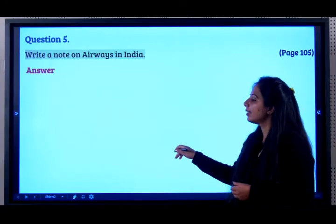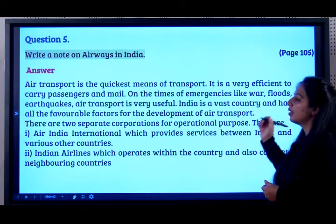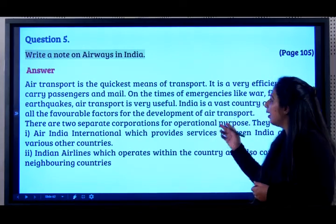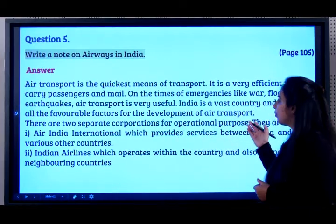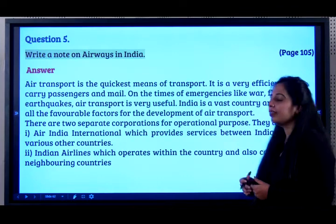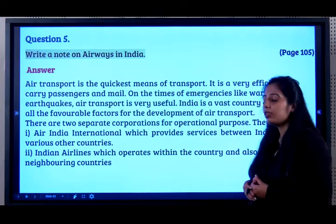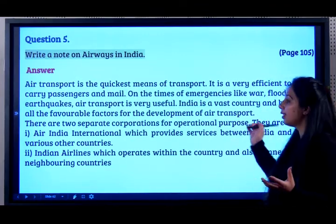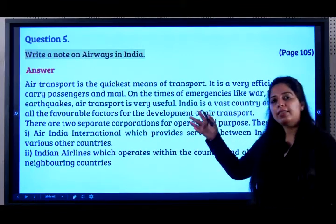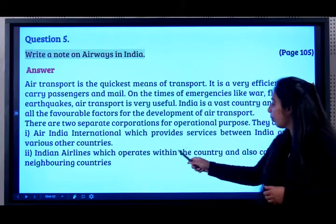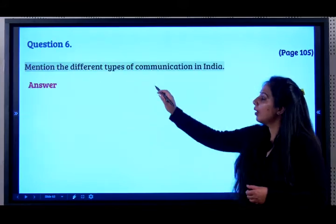Question 5: Write a note on airways in India. Air transport is the quickest means of transport, very efficient for carrying passengers and mail. In times of emergency like war, earthquake, or flood, air transport is very useful. India has two separate corporations: Air India International, which provides services between India and various countries, and Indian Airlines, which operates within the country and connects neighboring countries.